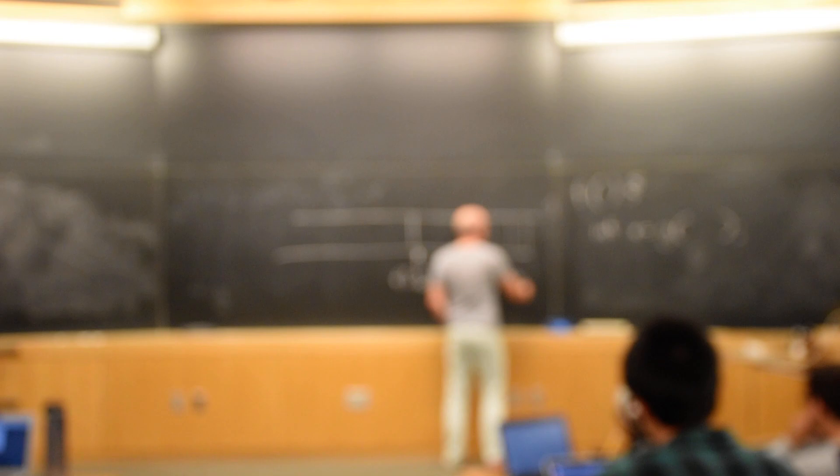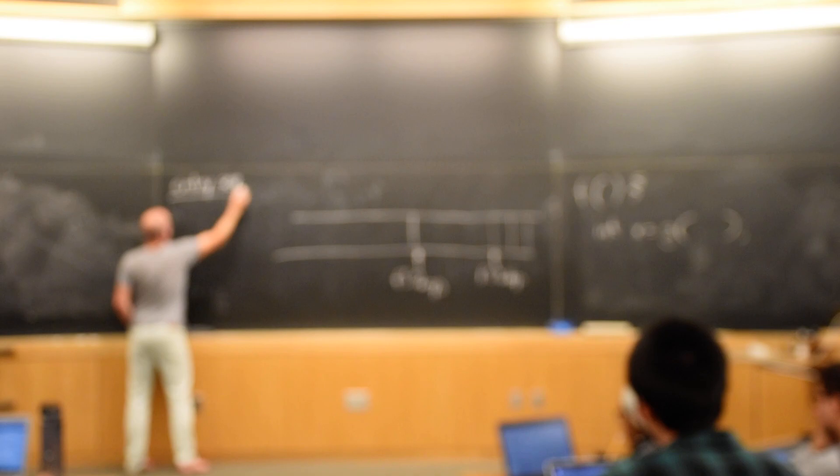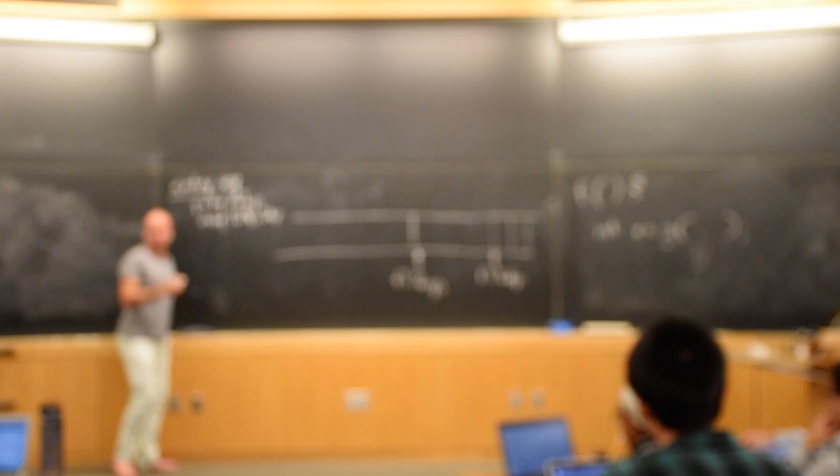So usually what the RBP points to is like one past the return address. So the entry sequence, I'm trying to be aware of where that camera is. The entry sequence for a function often begins with push Q, RBP, move Q, RBP, RSP, excuse me, RBP.